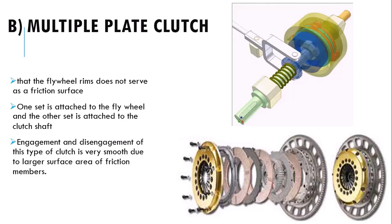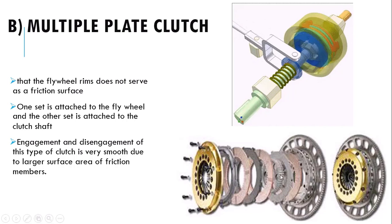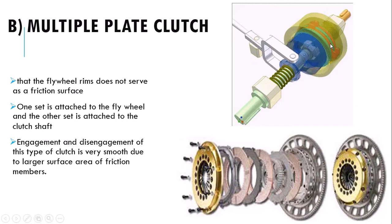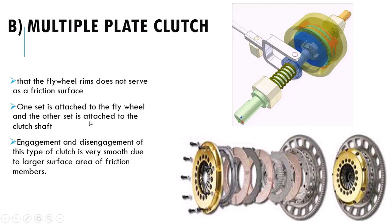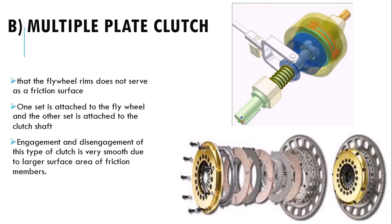In the multiple plate clutch, you can see the exploded view — there are three friction plates provided in between, that's why it is called a multi-plate clutch. We use multiple plates when power transmission is very high, because a single plate would be prone to wearing out under high load. One set of plates is attached to the flywheel and the other set is attached to the clutch shaft. Engagement and disengagement of this clutch is very smooth due to the larger surface area of friction members. Nowadays many vehicles use multi-plate clutches; single plate was used more earlier in bikes or scooters.